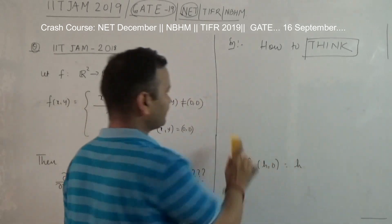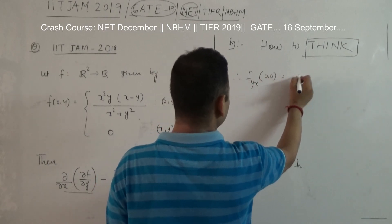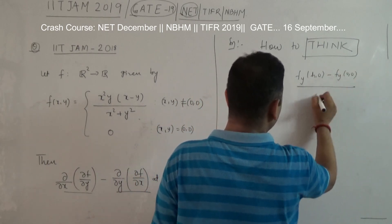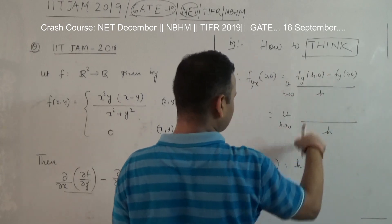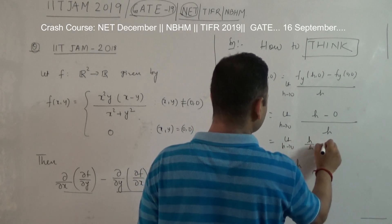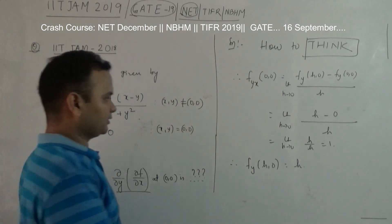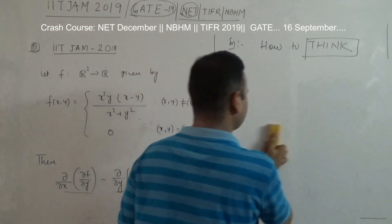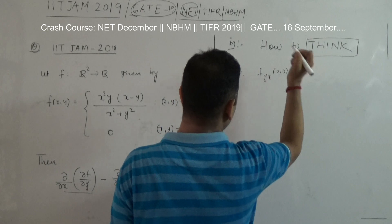Therefore, f_yx at (0, 0) is equal to the limit as h tends to 0 of [f_y(h, 0) minus f_y(0, 0)] divided by h. This is the limit as h tends to 0 of [h minus 0] divided by h, which is the limit of h/h as h tends to 0. So this value is 1. Therefore, f_yx at (0, 0) equals 1.